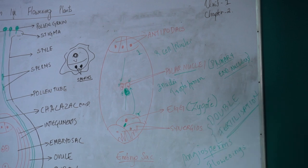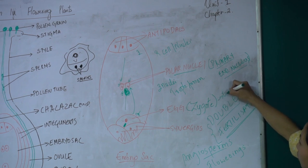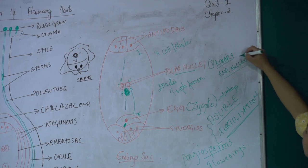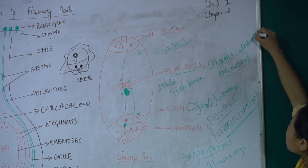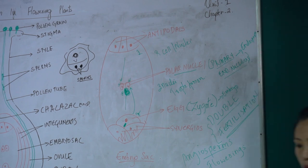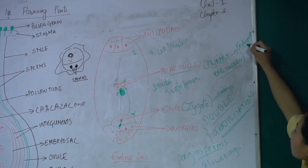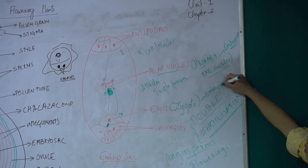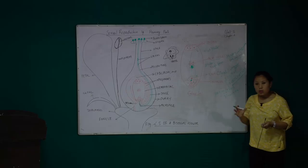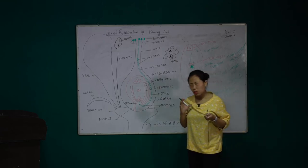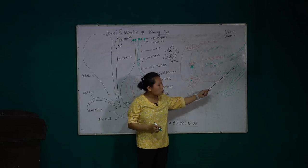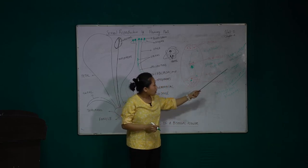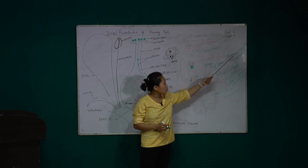After fertilization, the zygote develops into the embryo and the primary endosperm nucleus develops into the endosperm. During the germination of seeds, the endosperm serves as nutrition for the developing embryo. The endosperm gives nutrients to the developing embryo, and the embryo gets all its nourishment from the endosperm.